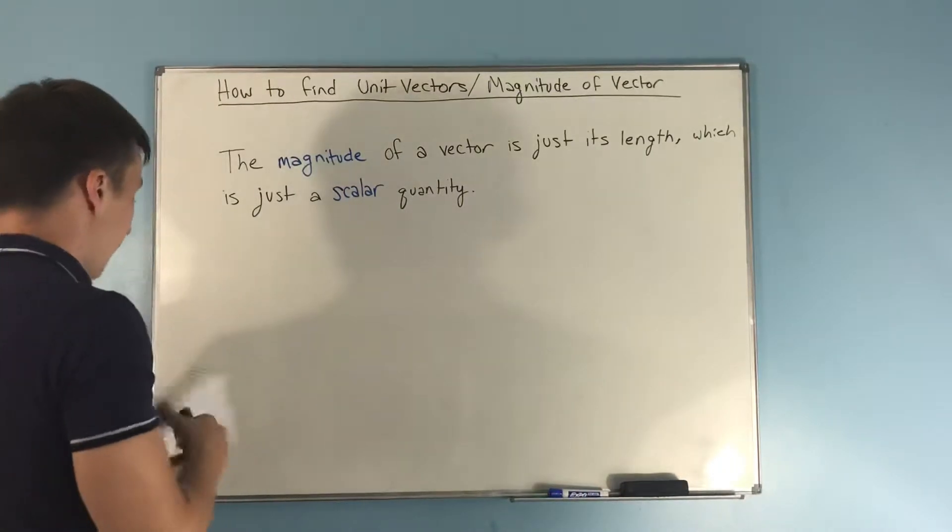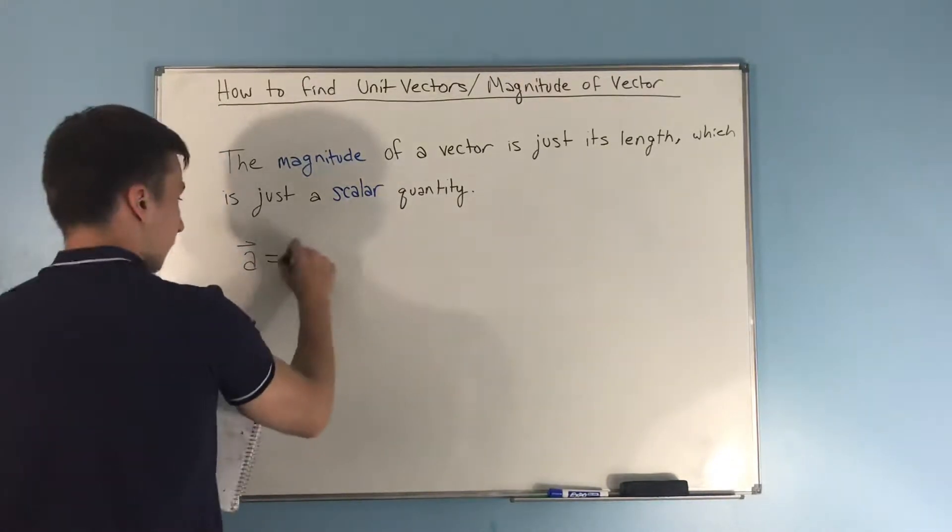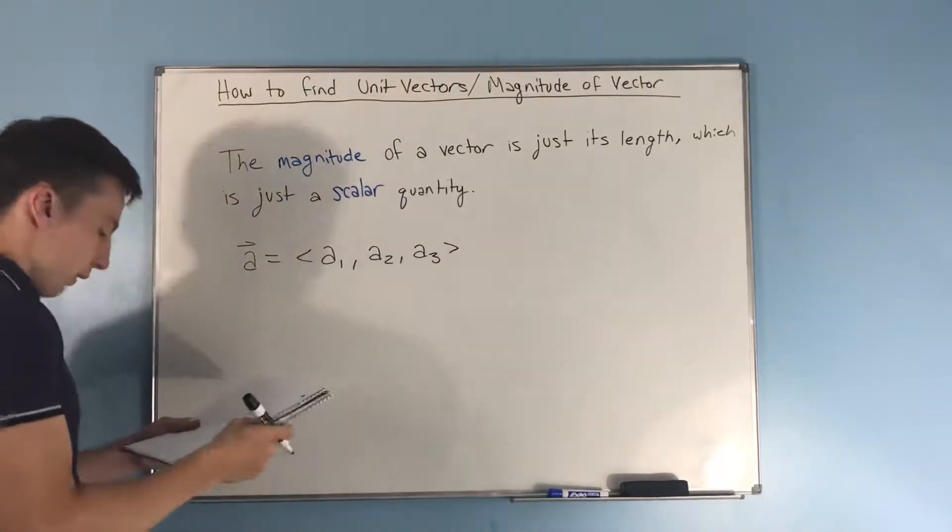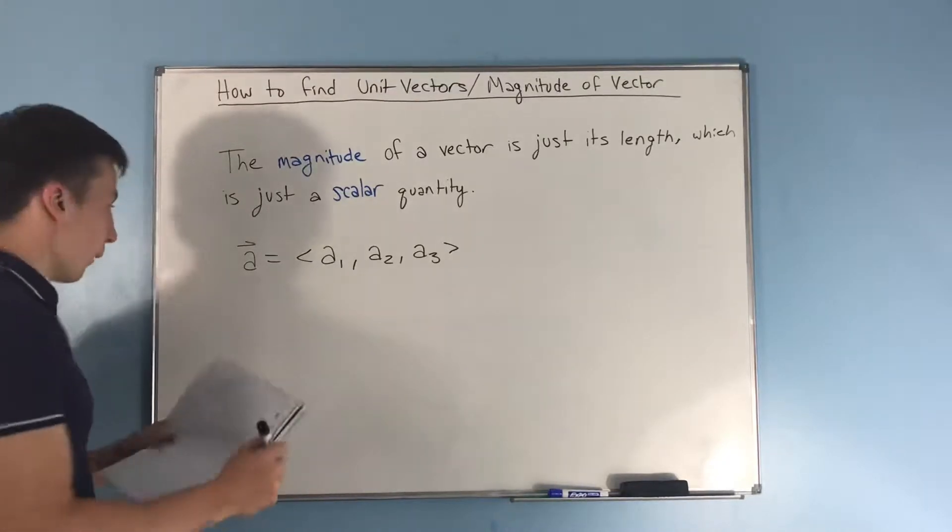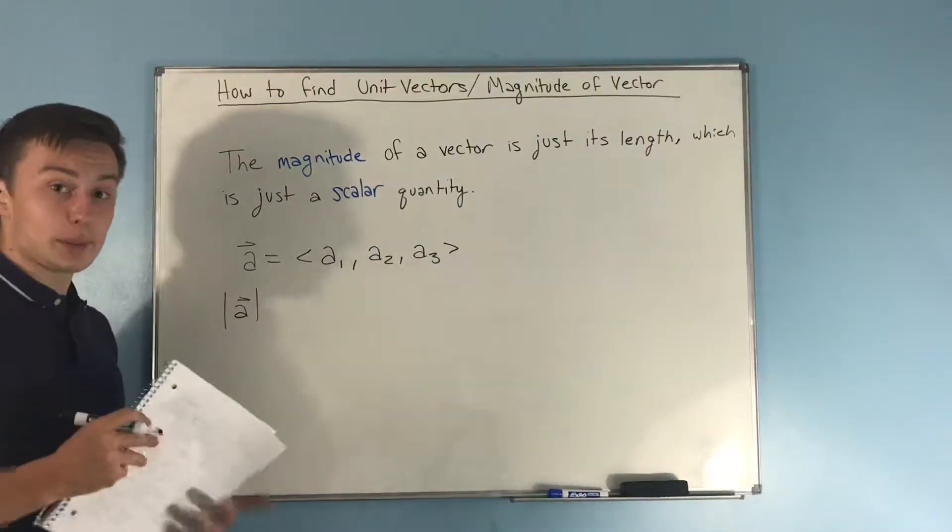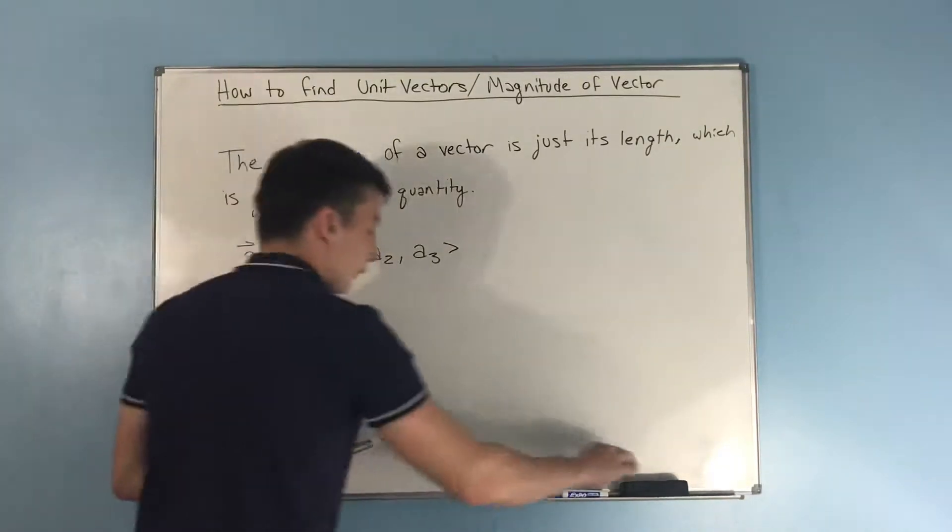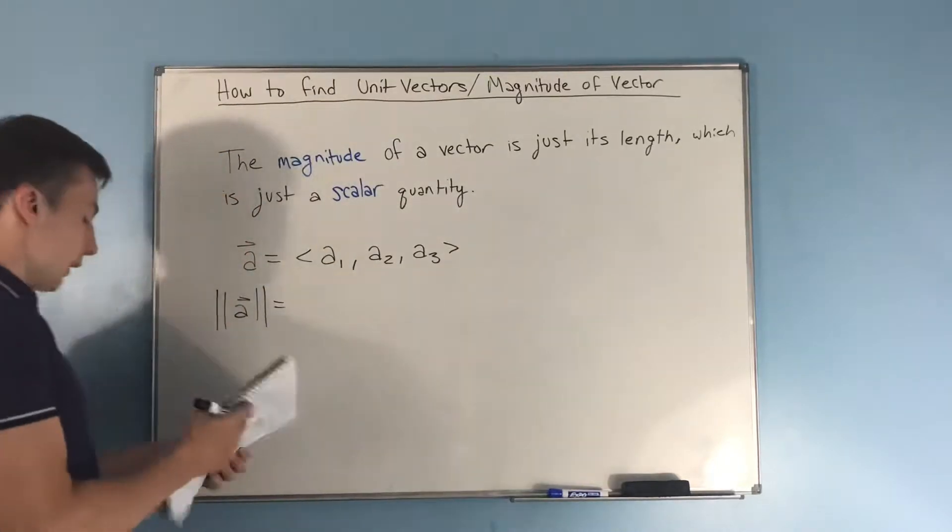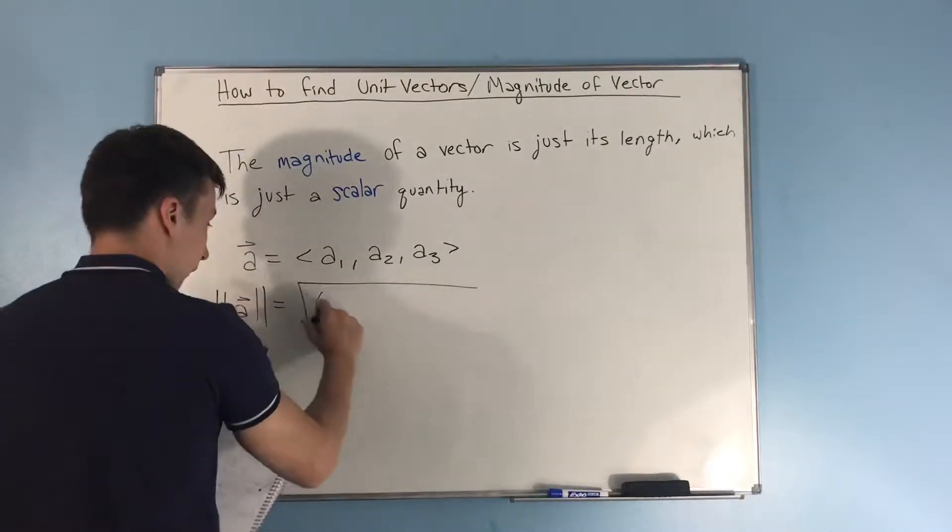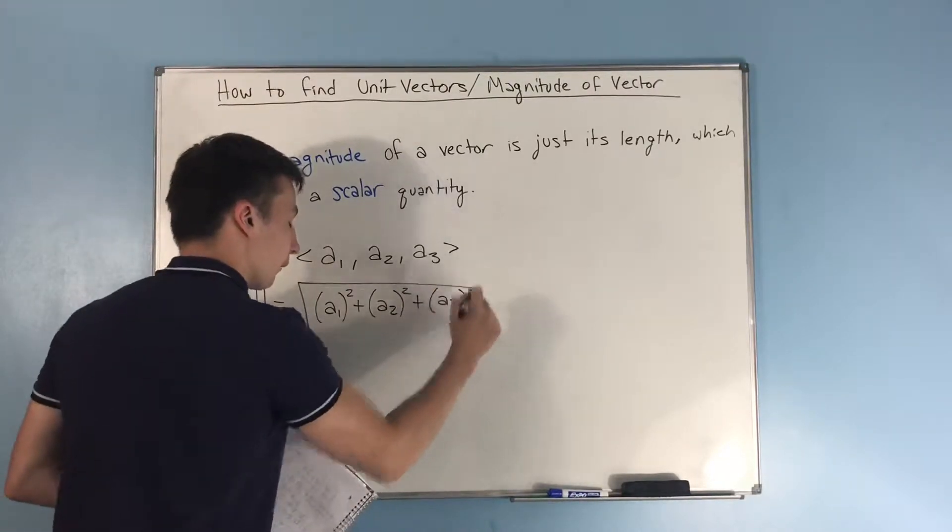Now, let's say that we have vector a, and vector a is represented by the components a1, a2, and a3. Well, if we want to find the magnitude of that vector, which can either be denoted with just one set of absolute value signs or maybe in some cases two sets of absolute value signs, that's going to be equal to the square root of your first component squared plus your second component squared plus your third component squared.